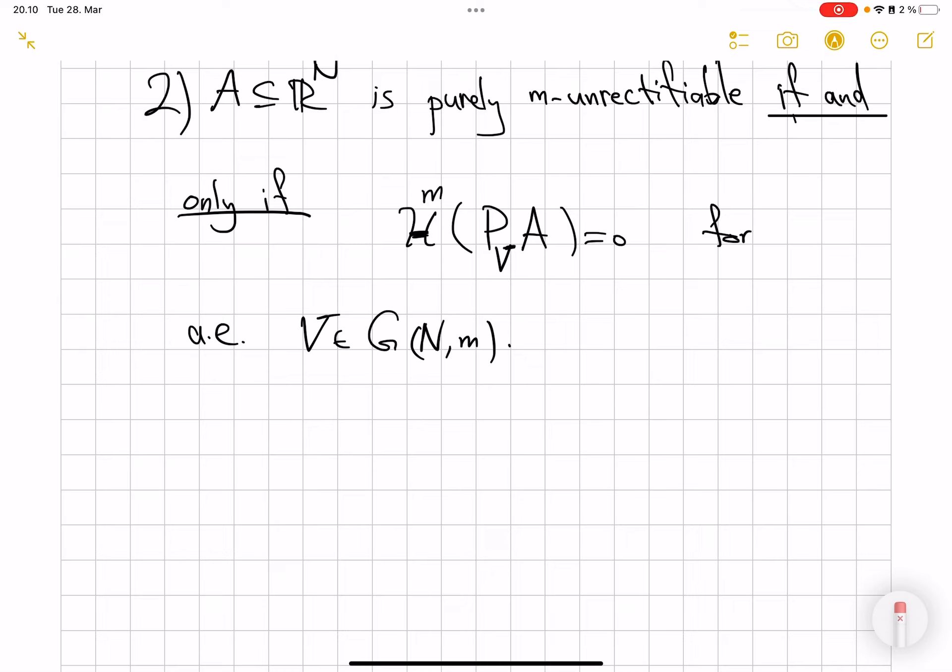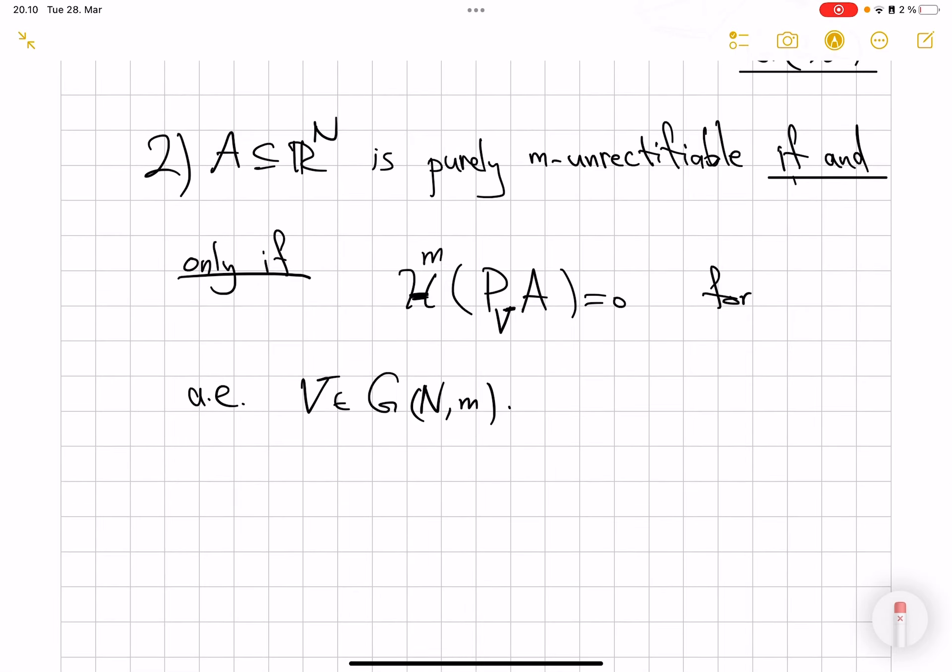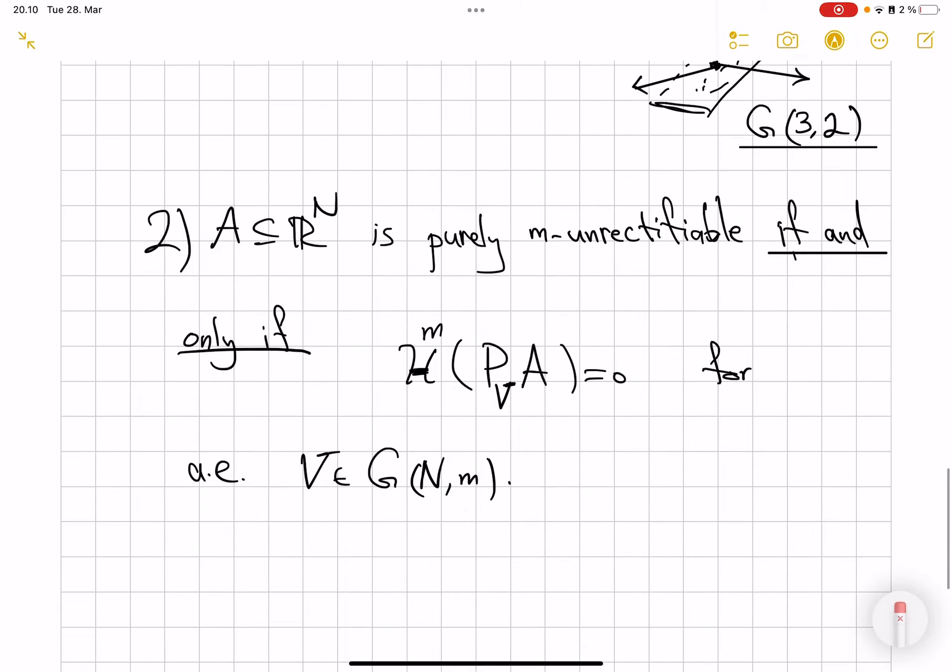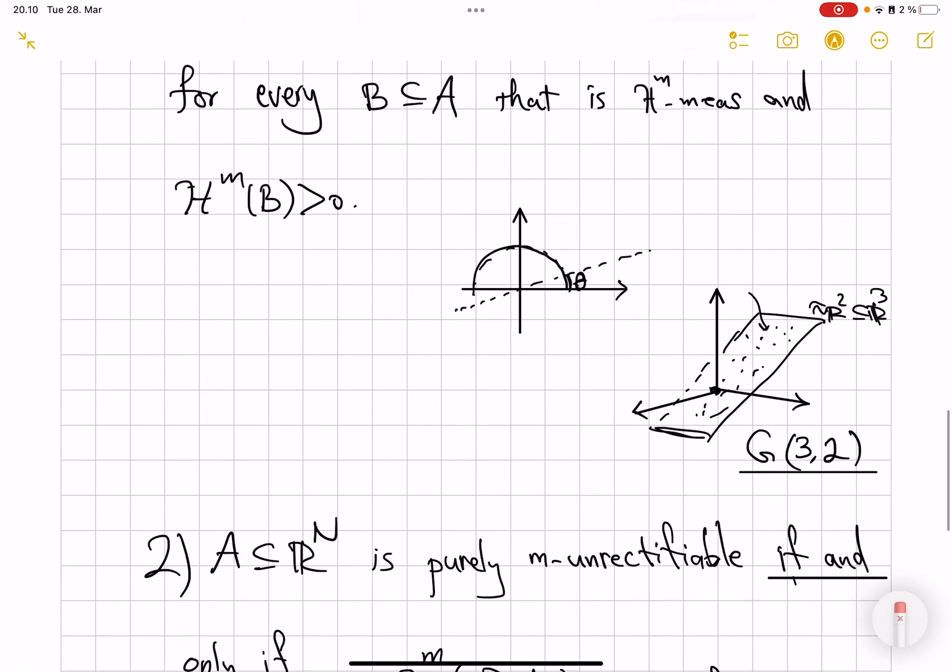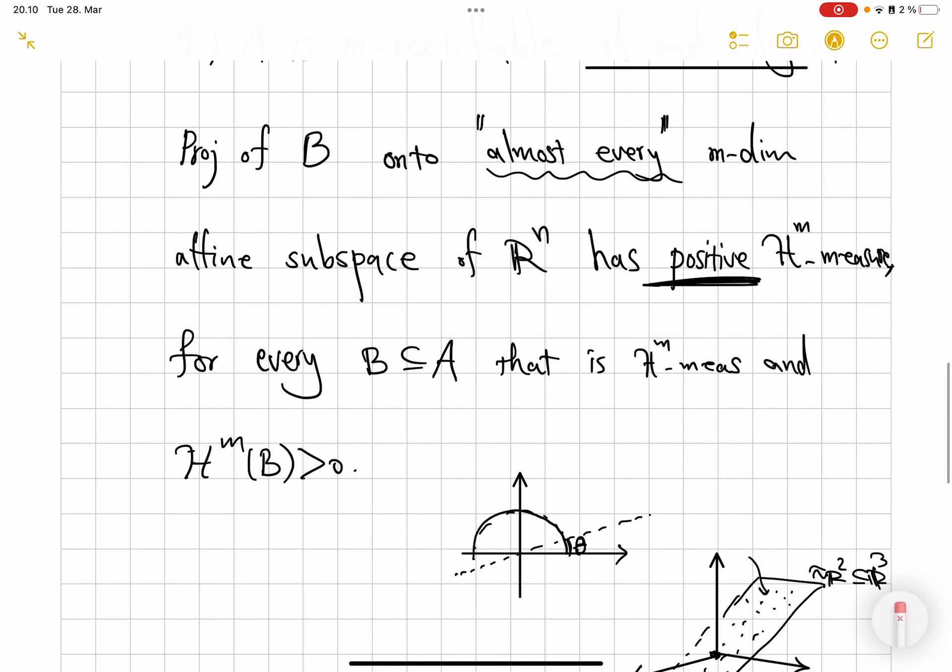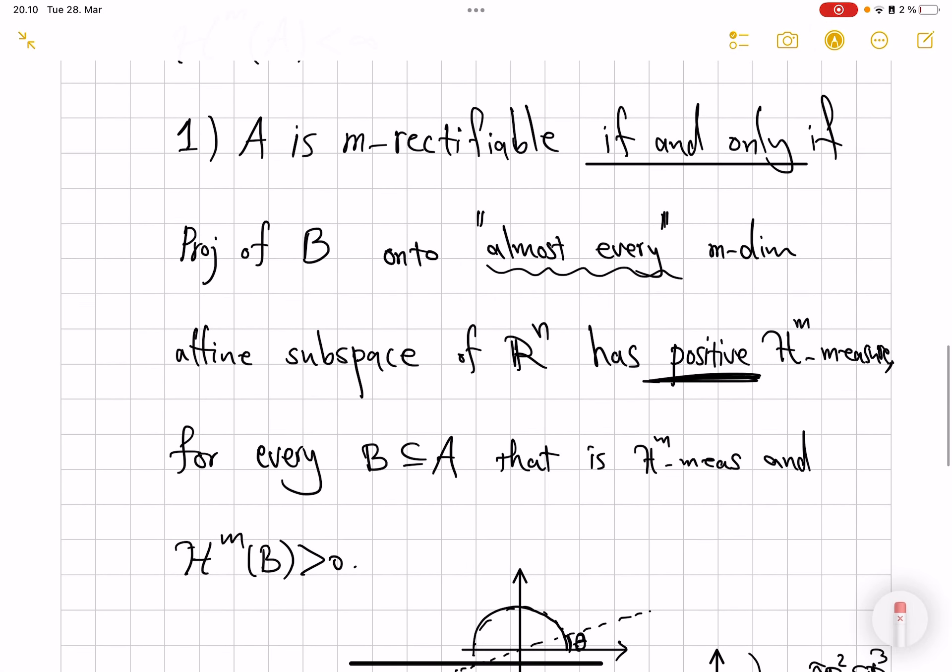One topic of current research is to say more about the exceptional sets in either scenario. So starting with, for example, a rectifiable set, what are the bad directions? How big can this set of bad directions itself be? And hopefully I will do some video on that soon. Thank you so much for watching to this part and have a great day.